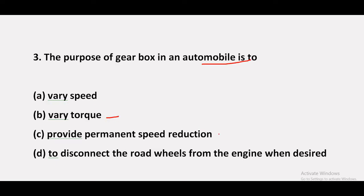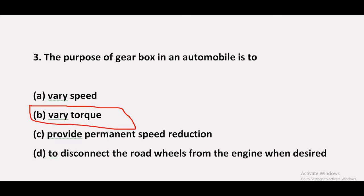Question 3: The purpose of a gearbox in an automobile is to — option A: vary speed, option B: vary torque, option C: provide permanent speed reduction, option D: disconnect the road wheels from the engine when desired. The answer is B — vary torque.